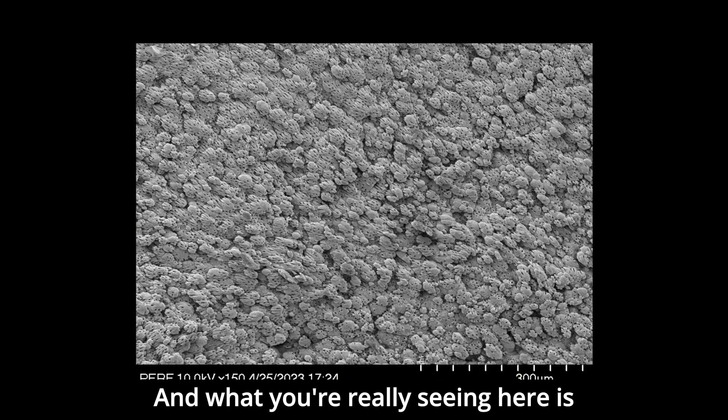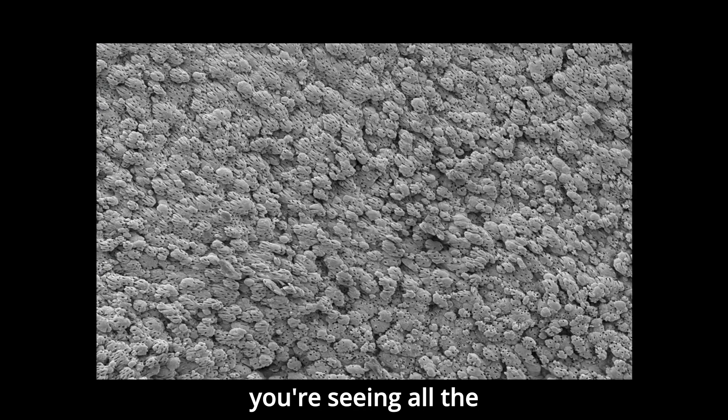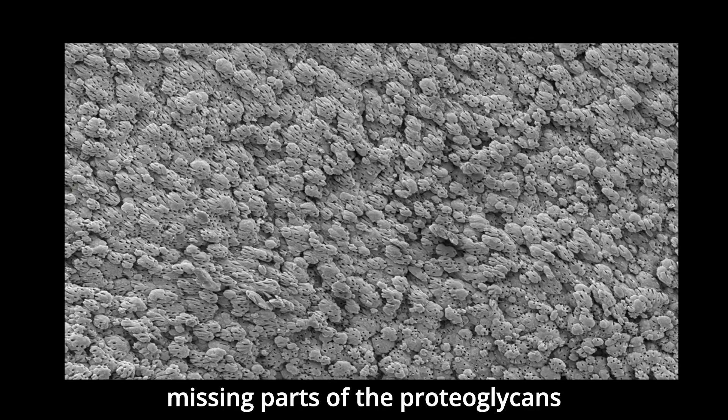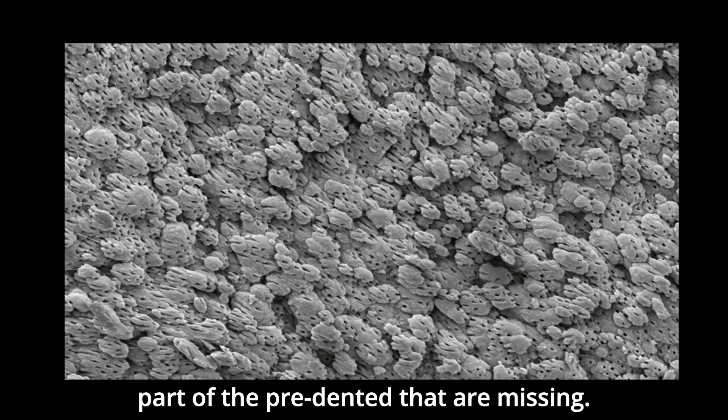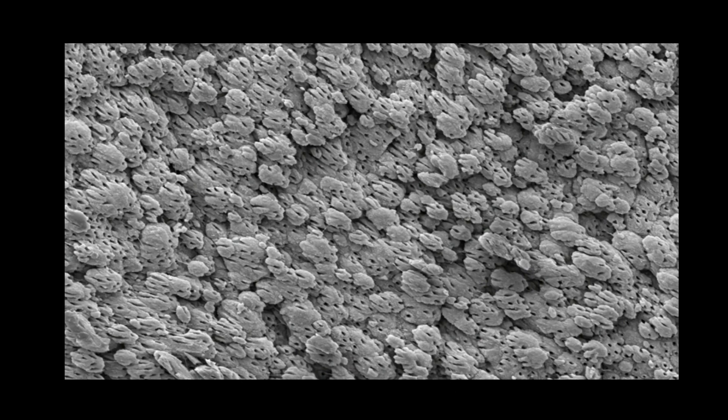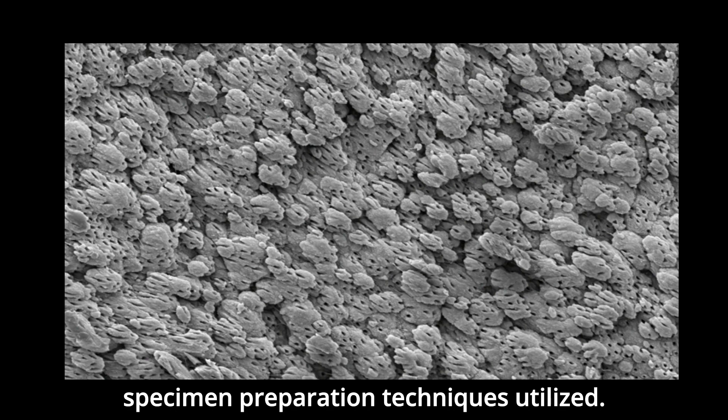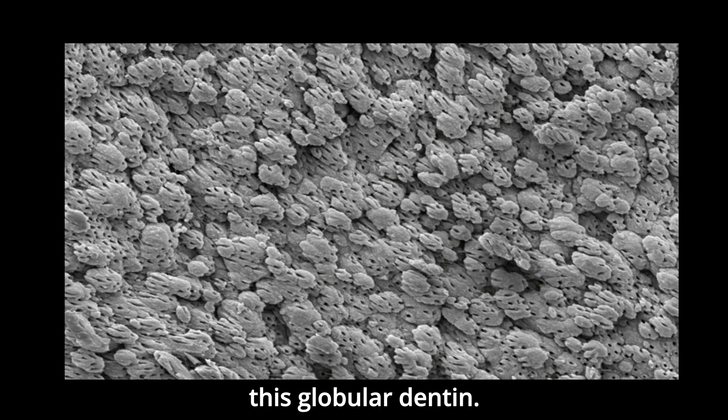And what you're really seeing here is all the missing parts of the proteoglycans and non-collagenous proteins that are part of the pre-dentin that are missing. They're missing on account of the specimen preparation techniques utilized. So you're looking at this globular dentin.